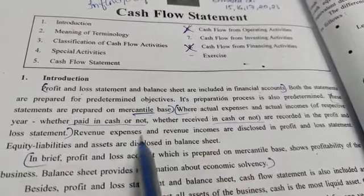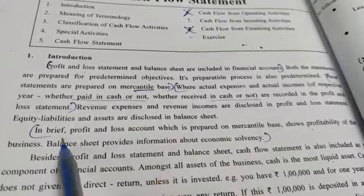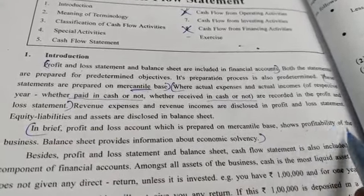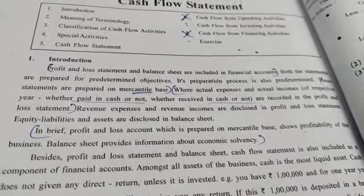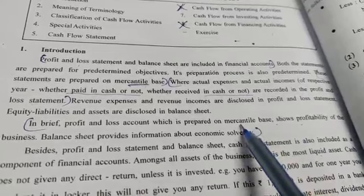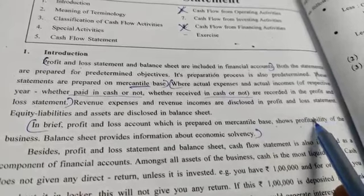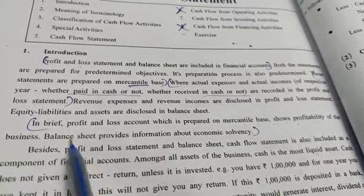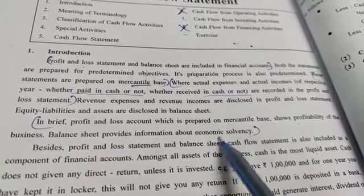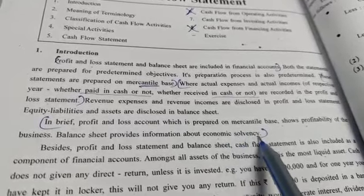Revenue expenses and revenue incomes are disclosed in the profit and loss statement. Profit and loss, which is prepared on mercantile basis, shows profitability of the business. The balance sheet provides information about economic solvency — that is, whether you are financially solvent or not.